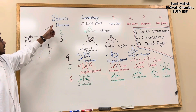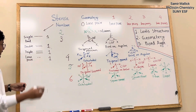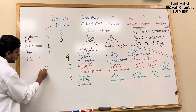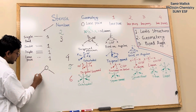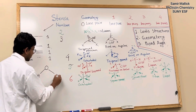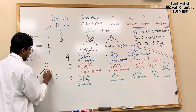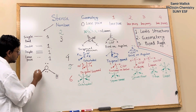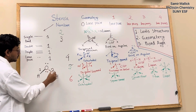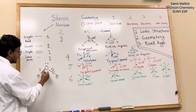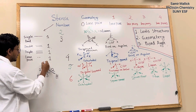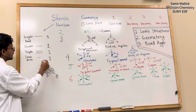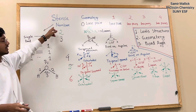To determine the steric number, let me give you an example. We already know the structure of a water molecule. In the water molecule, there are 2 single bonds and 2 lone pairs — that gives us 1, 2, 3, 4. So the steric number is 4.